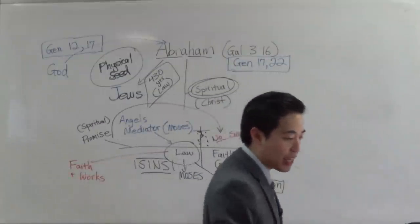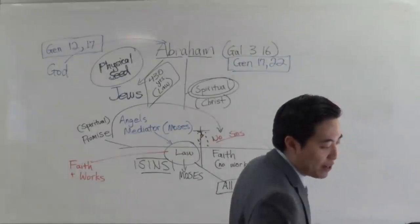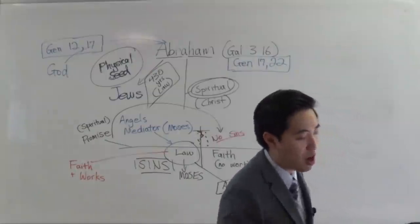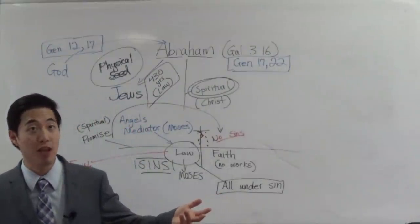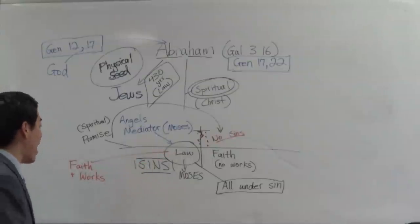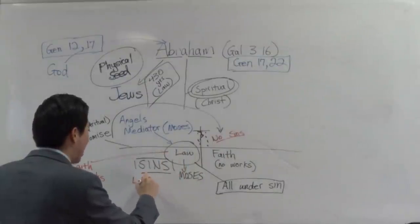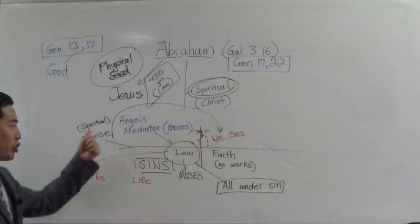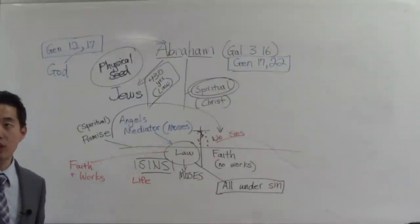When you look at verse 21, it says if there had been a law given which could have given life, verily righteousness should have been by the law. Paul said that the law cannot give life. Anti-dispensationalists will take advantage of that, where because life cannot be gained under the law, they argue we're teaching heresy when we say faith and works is required for salvation during the Old Testament.